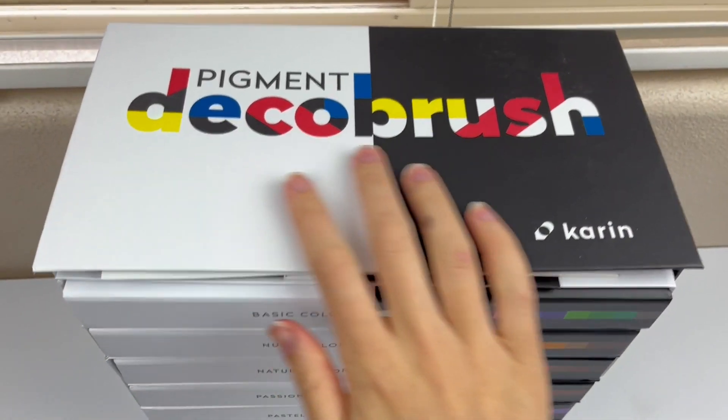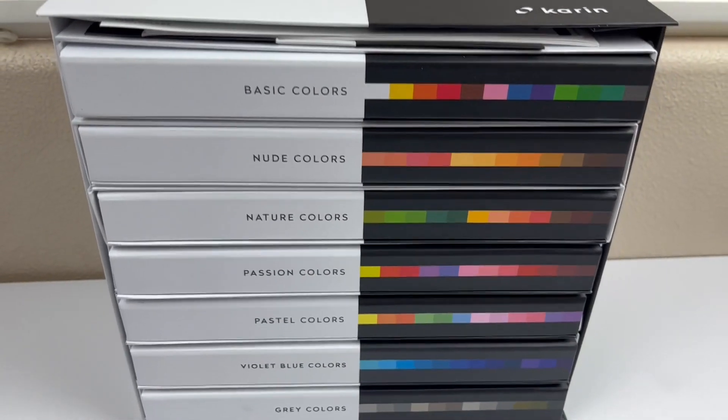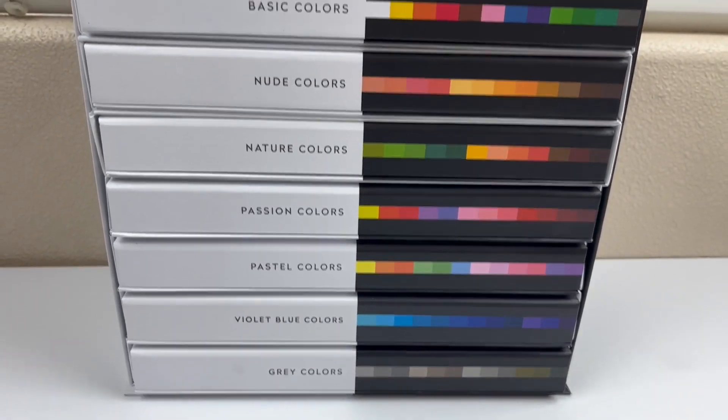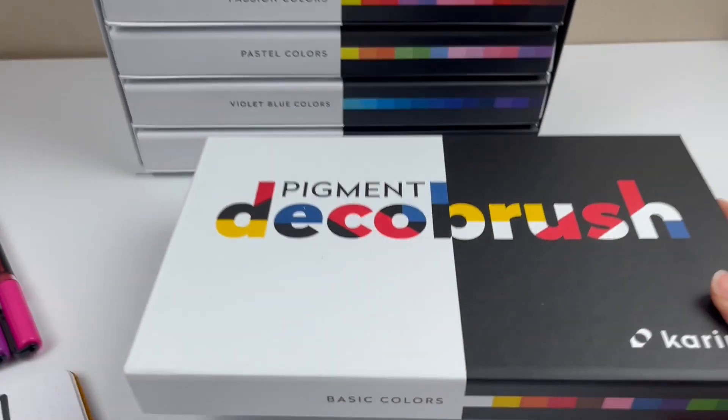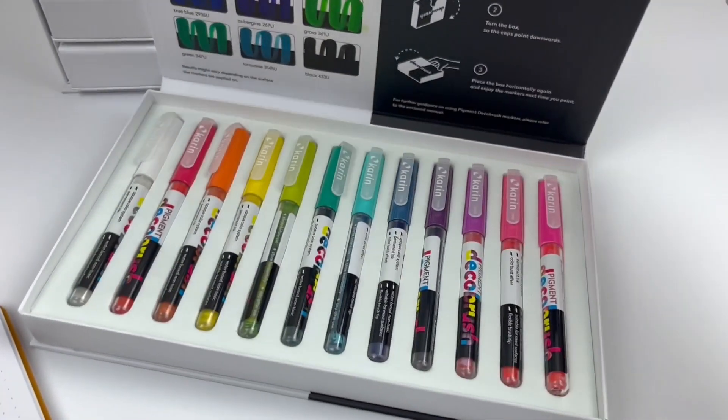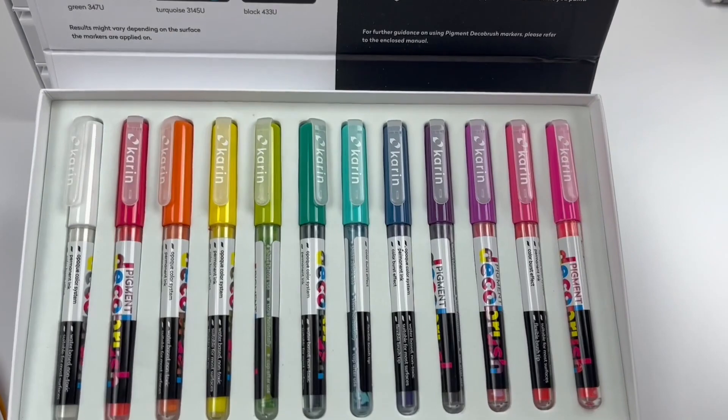Karen markers also came out with these pigment deco brush markers. They're the same brush tip, but the ink is pigment-based. So they're like acrylic paint brush pens, as opposed to the original, which are more like watercolor brush pens.